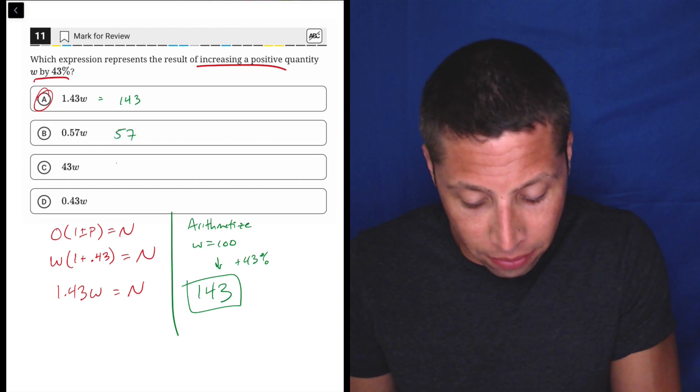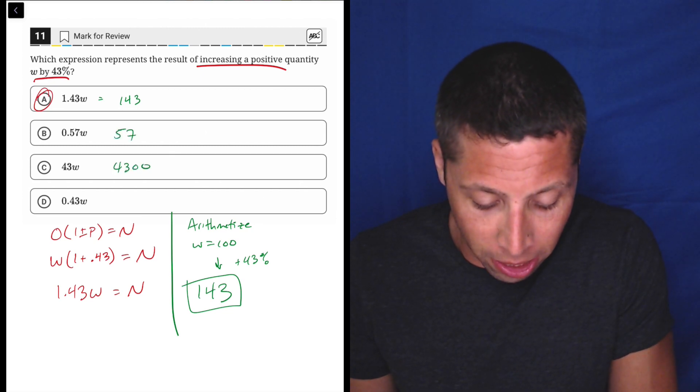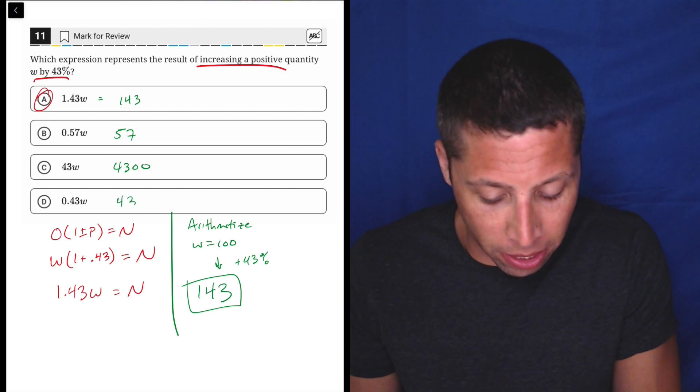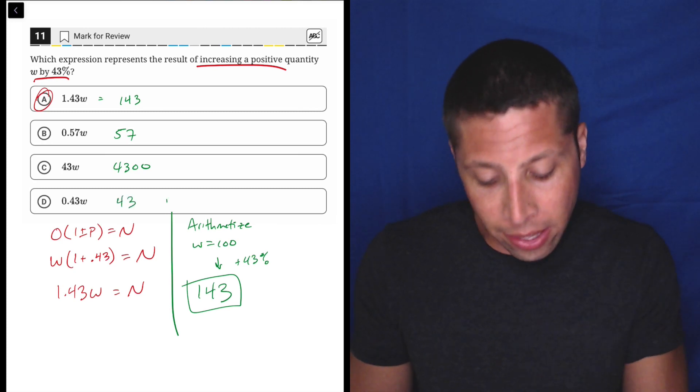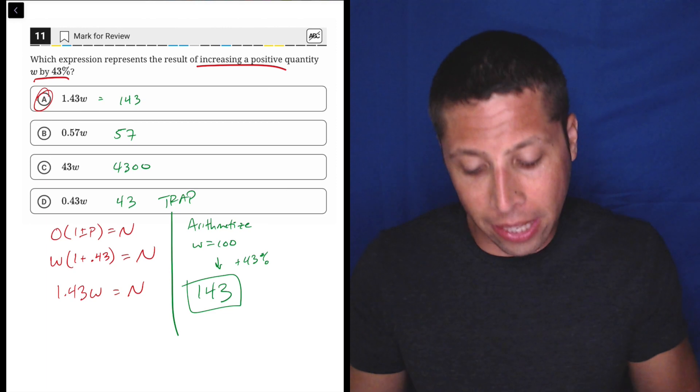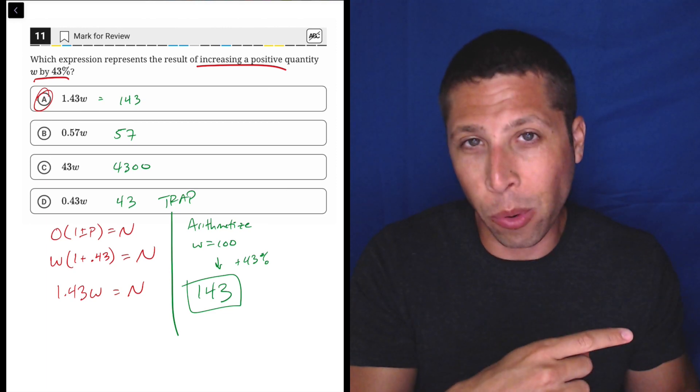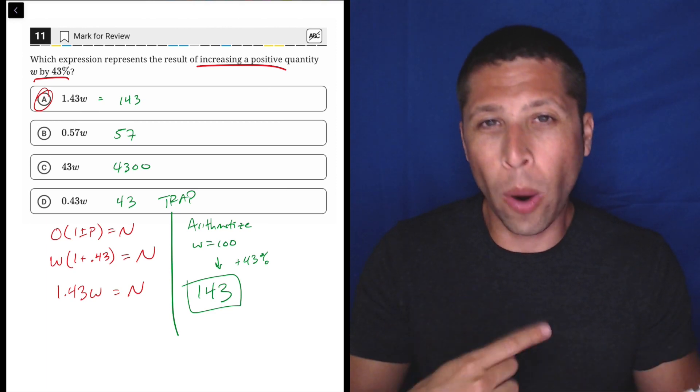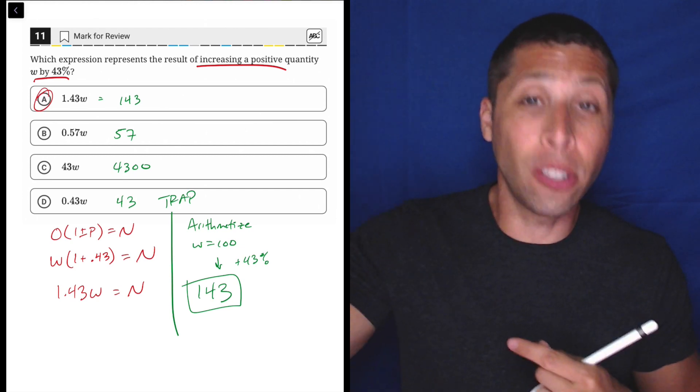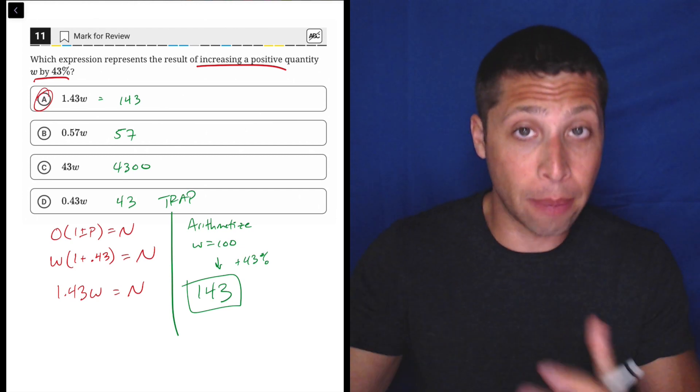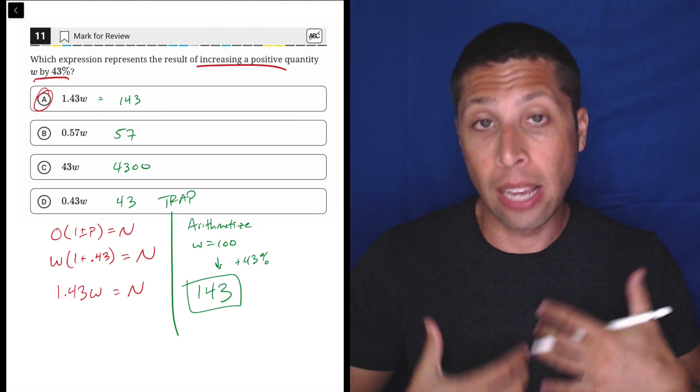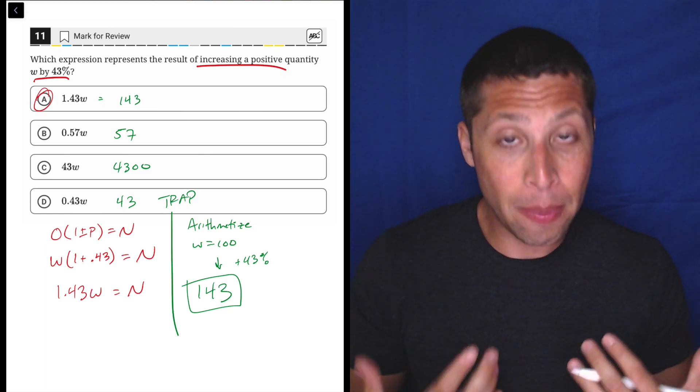This would be 57. This would be 4,300, way too big. And this would be 43. So this is maybe the biggest trap here because they know that you see the 43%, but you don't quite understand that they're asking for an increase in that percentage.